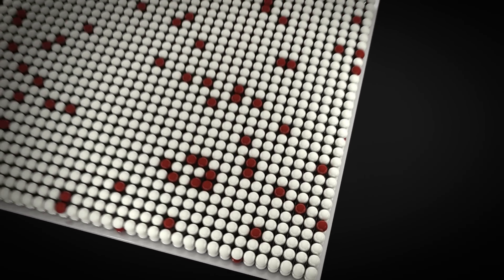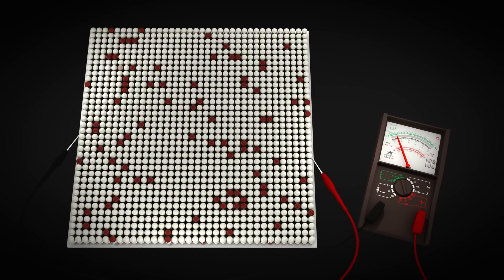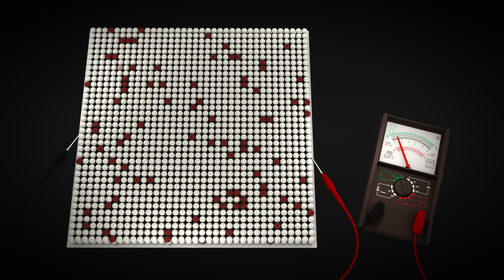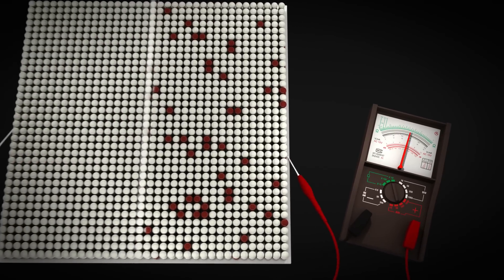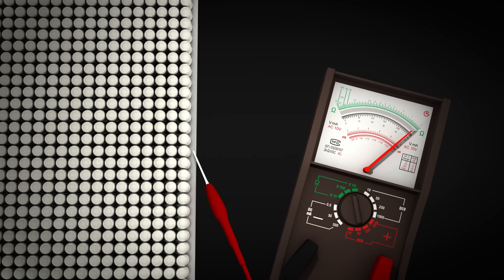Impurities can negatively influence the thin film properties, the electrical conductivity, for example. Only highly pure sputtering targets can ensure high quality thin films.